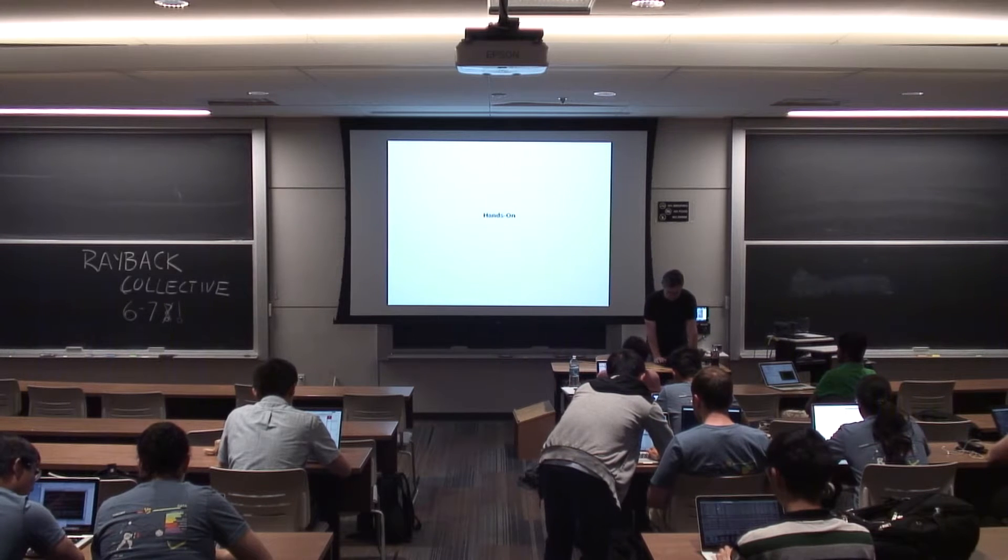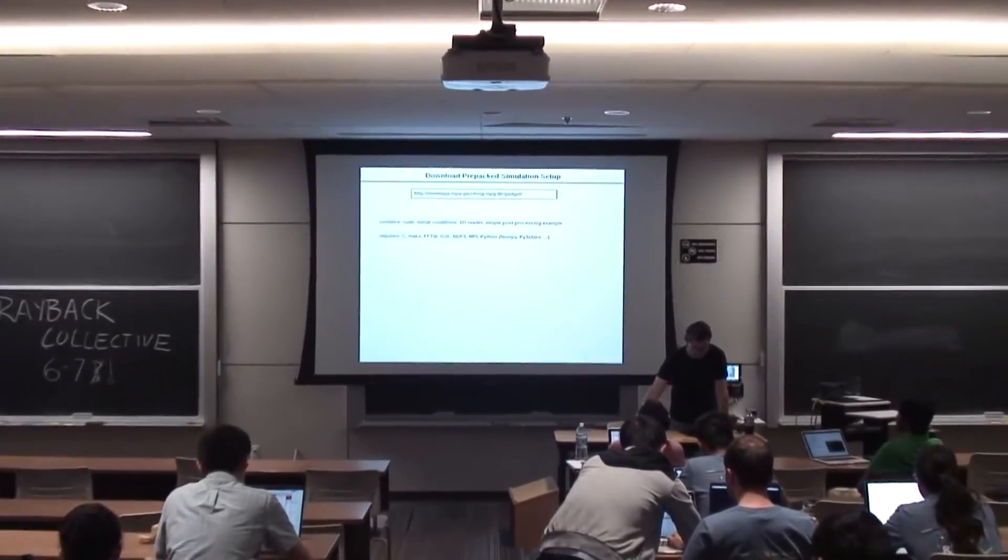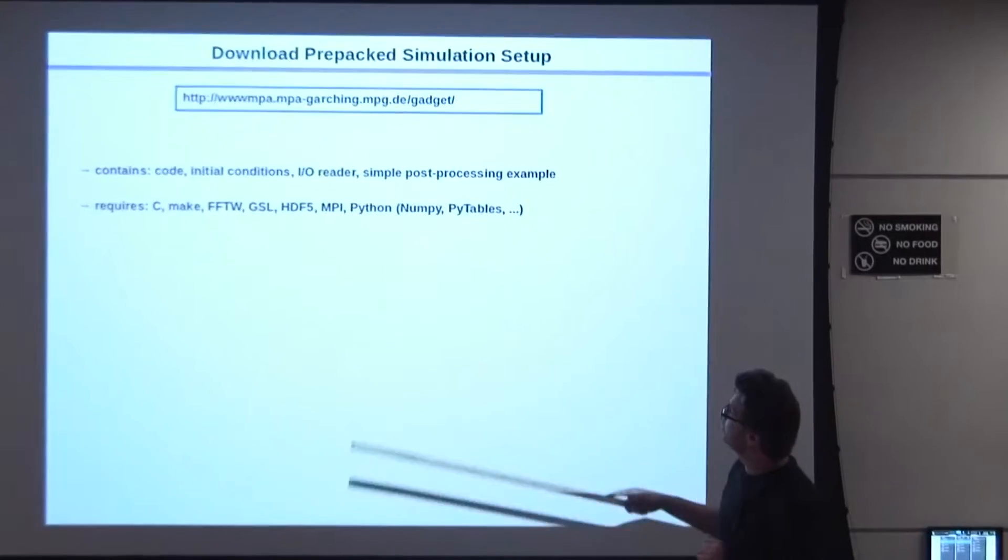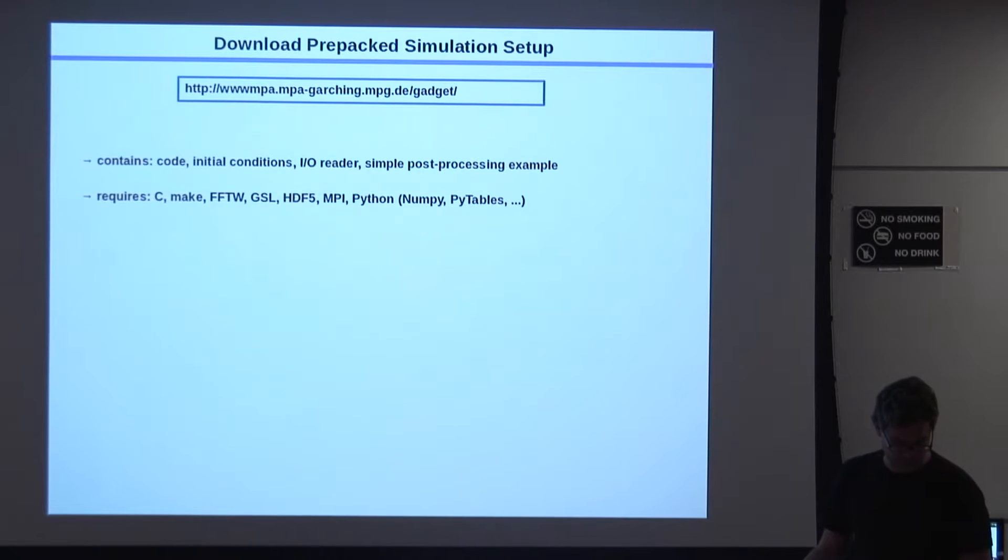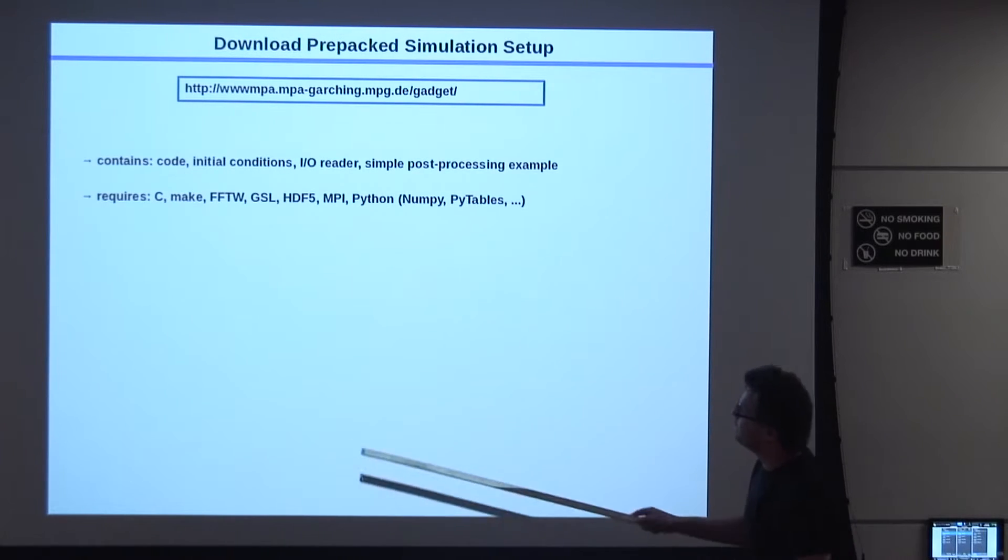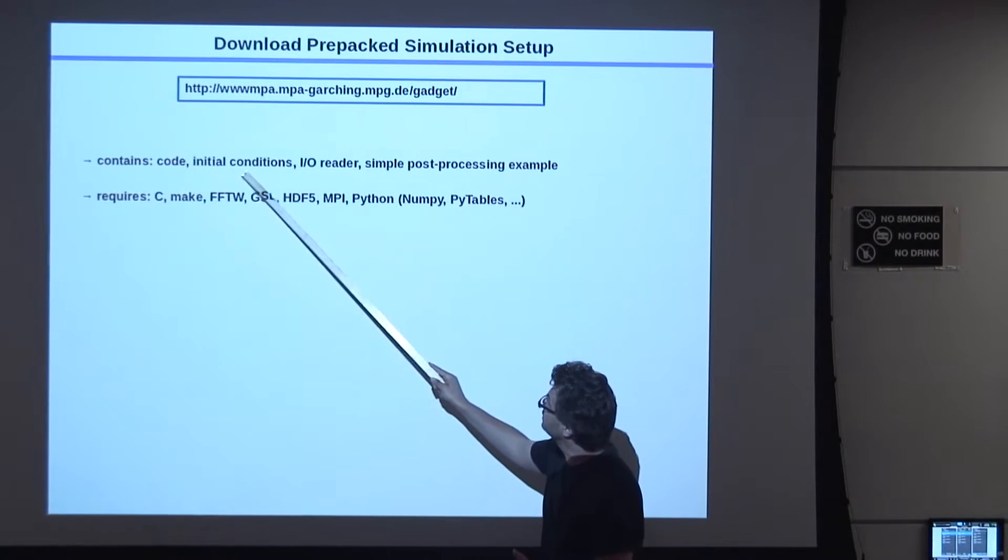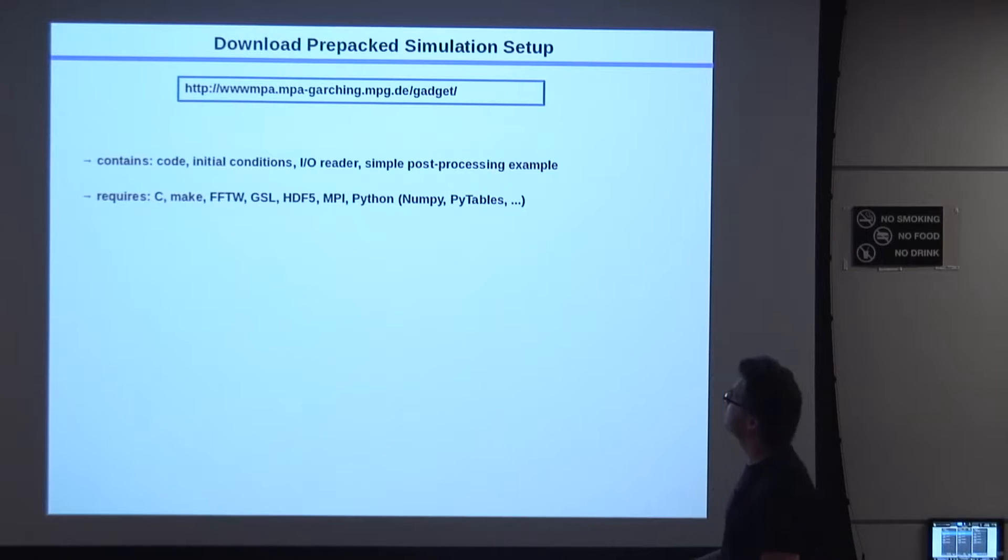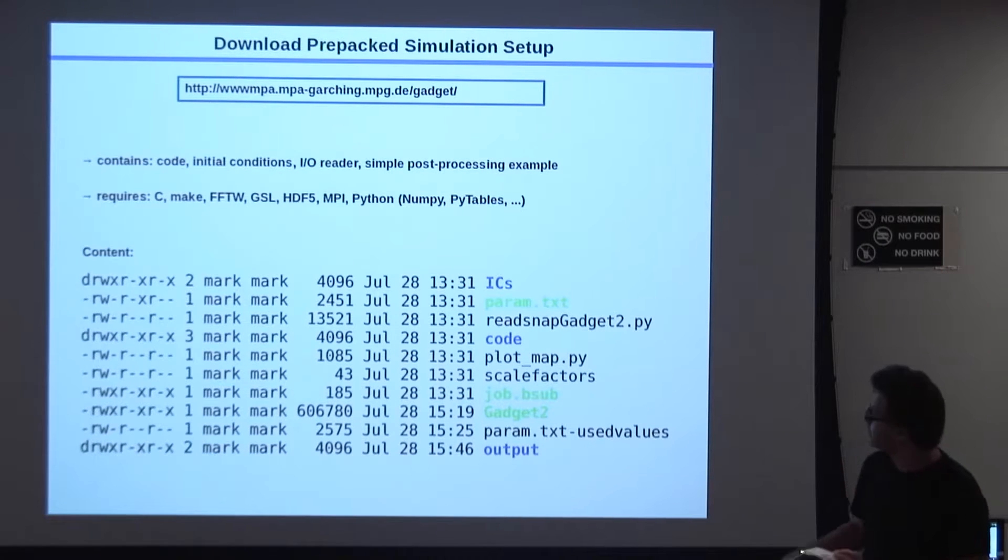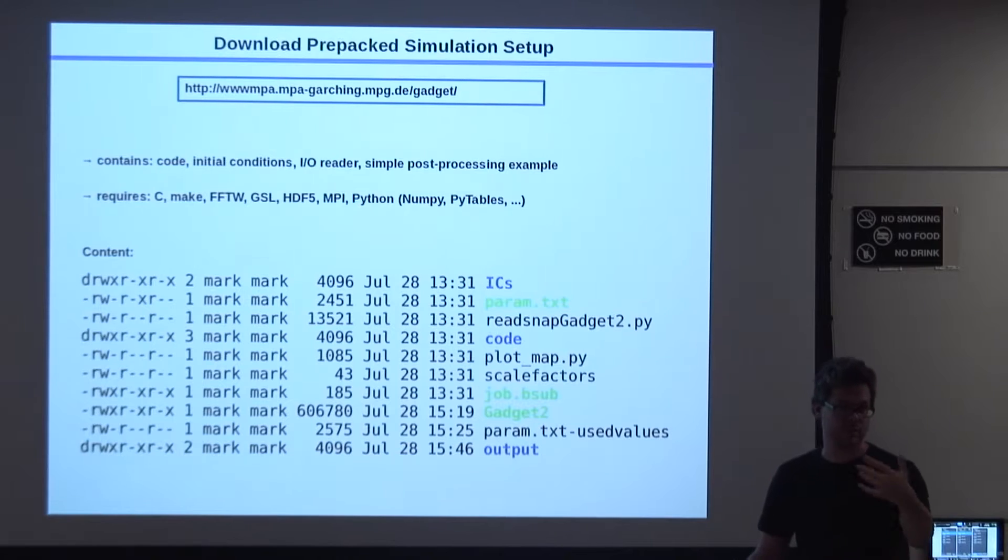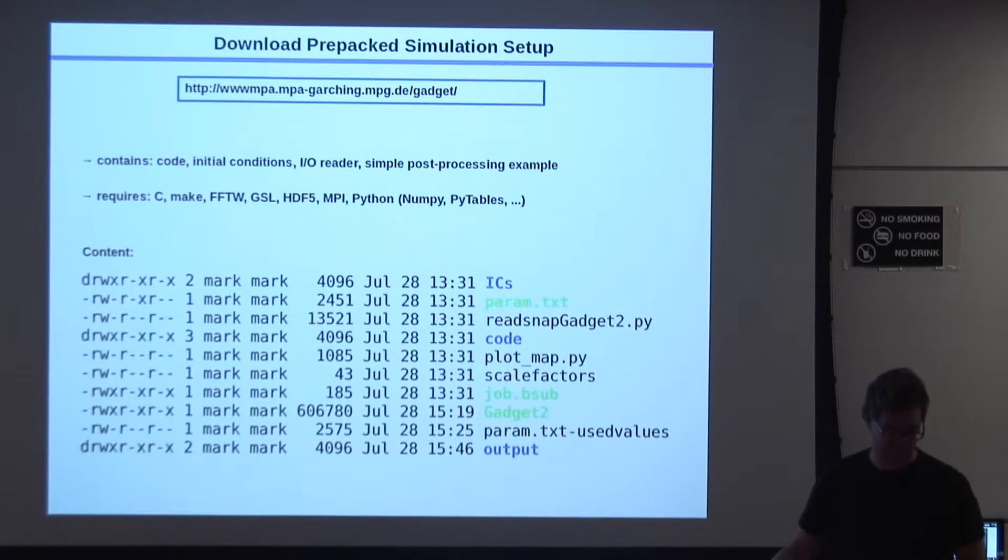So as I said, this is the hands-on session. It's all based, as you know, on the gadget code. And as I mentioned a few times, you need these libraries, which by now most of you probably have installed. And there's a couple of pieces in this code package that you downloaded. It's the actual code, the initial conditions, some I.O. reader written in Python, and the simple post-processing example which is also Python code to make the maps. Of course, if you run production runs, you put this on a scheduler on a large cluster, and then this runs on many more cores if you have larger jobs.